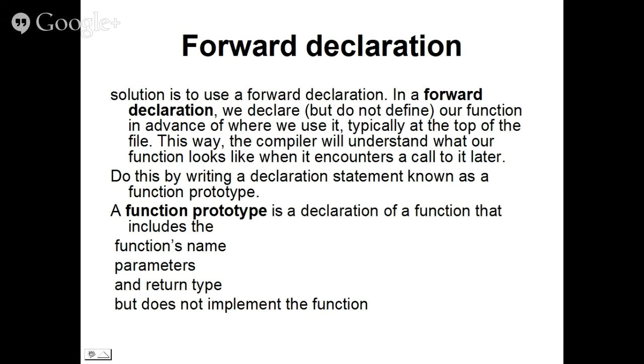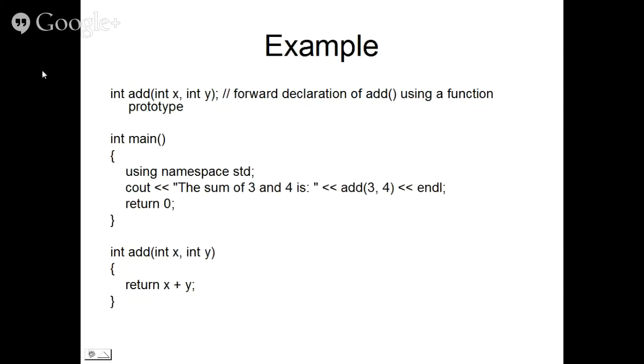If you're defining the function somewhere later down in the program, you have to tell your compiler: boss, some function is going to be used in my program and this is how it will be appearing. So that's a function prototype. A prototype includes the name, the parameters, and the return type, but the implementation, the actual body, what you're supposed to do is coming in later. So this is one thing that you have to remember.